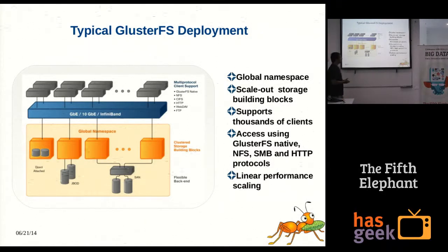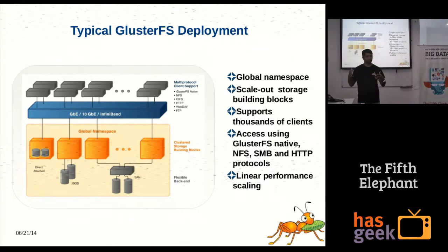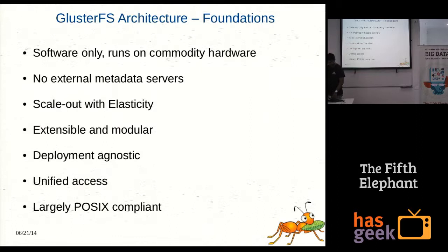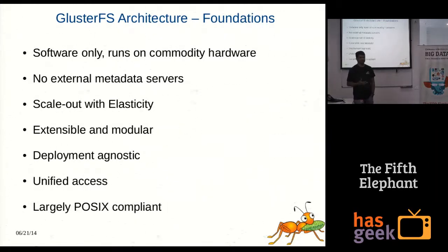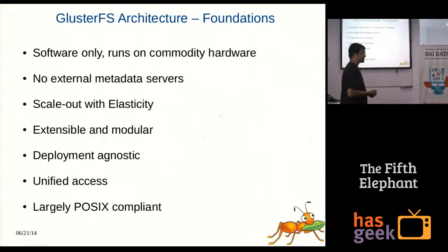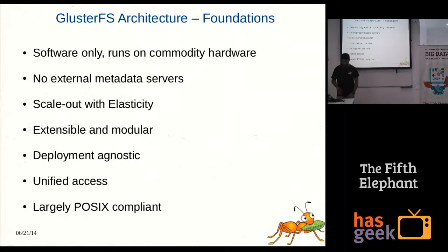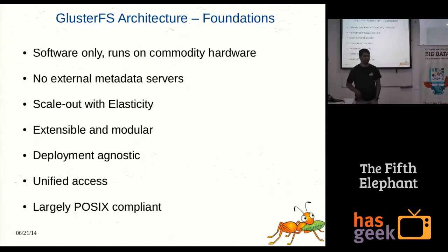GlusterFS is a scale-out solution, so it provides linear performance scaling. That means when you keep adding more nodes, performance should actually increase rather than decrease, because you are adding more nodes. That is how a scale-out solution should work. GlusterFS architecture is an optional solution — it can run on commodity hardware like x86 or Itanium. There are no external metadata servers. It is scale-out with elasticity, extensible and modular, with unified access through multiple protocols. It is a POSIX-compliant file system.